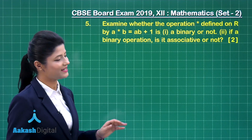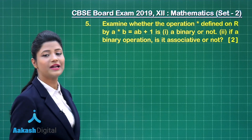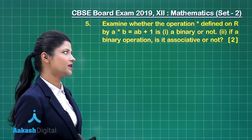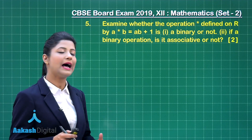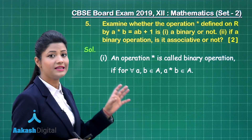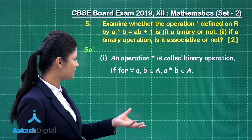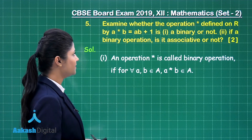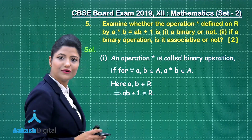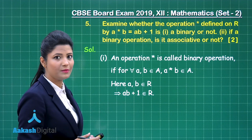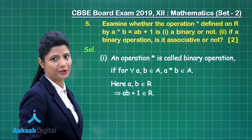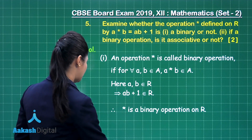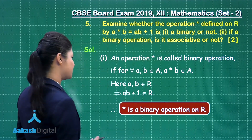Let us discuss question number 5. It states: examine whether the operation star defined on the set of real numbers by A★B = AB + 1 is binary or not. If it is a binary operation, is it associative or not? This is a 2-mark question. For being a binary operation, an operation must satisfy the closure property: for all A, B belonging to set A, A★B must also belong to set A. Since A and B belong to the real numbers, their product AB is a real number, and adding 1 gives a real number. So the closure property is satisfied, and star is a binary operation on ℝ.